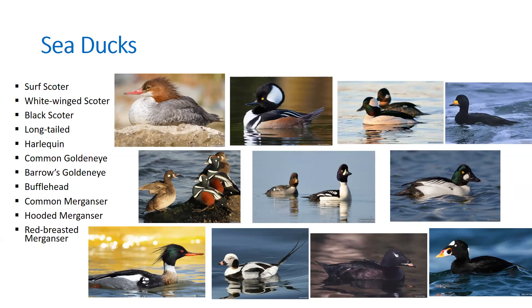The harlequin duck mates in its second year of life and nests in a variety of locations including small cliffs, tree cavities, and stumps along rocky shores close to mountain stream rapids. The common goldeneye and Barrow's goldeneye are named for their bright yellow iris. Next, one of the most common sea ducks in the Pacific Flyway with an estimated population of over one million birds: the bufflehead, with the male in front and female behind.